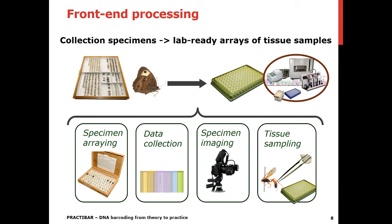Insects are usually labeled and pinned in insect boxes, as all of you probably know. In order to have the samples ready for processing — since our lab works with 96-well plates — the samples are arrayed in insect boxes that are prepared with lines drawn to mirror the microplates, with letters from A to H and numbers from 1 to 12, so that you know where to place each specimen.